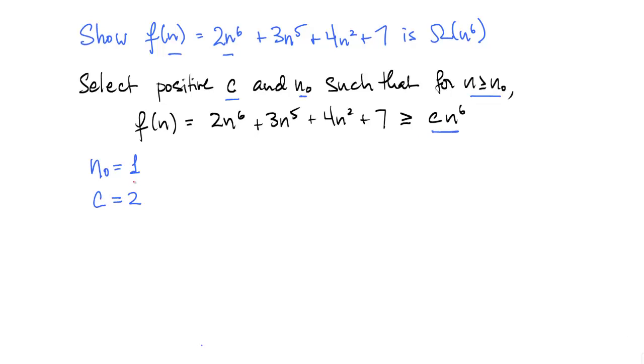The values that we're going to use are n₀ equal to 1 and c equal to 2. The 2 was chosen because that's the leading coefficient of the highest degree term in f of n. So we're going to show that for n greater than or equal to 1, the value of the function f is greater than or equal to 2 times n to the 6.